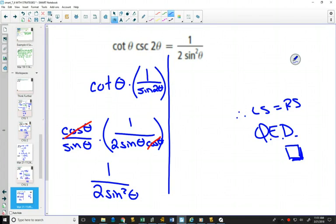And we're done. So the proofs with the double angle identities aren't that much harder than any of the proofs you've done so far. You just have to change that double identity right away, and then it becomes like a proof that you've solved in the past.